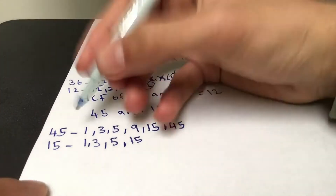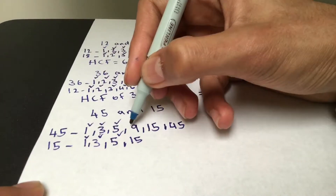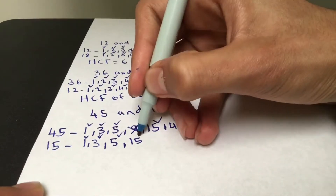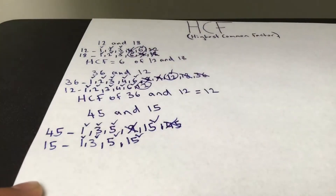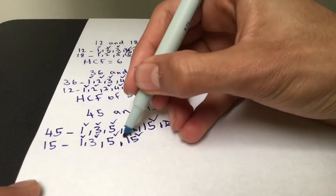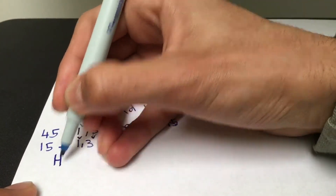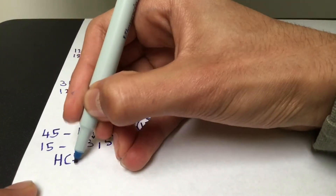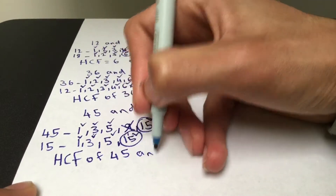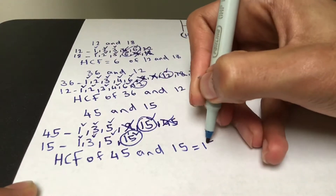Now we tick what's in common: 1, 3, and 5 are present in both. 9 is not present, so it's out. 15 is present, and 45 is not. The highest common factor is 15. The HCF of 45 and 15 equals 15.